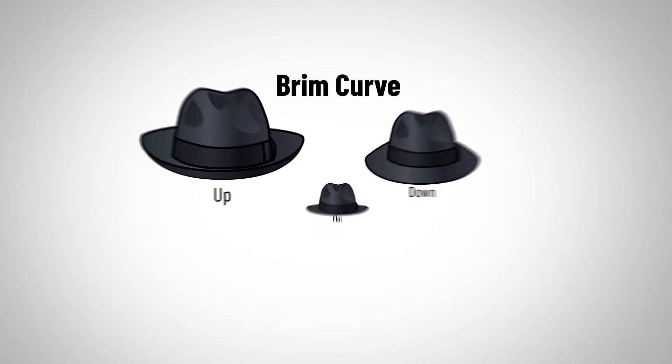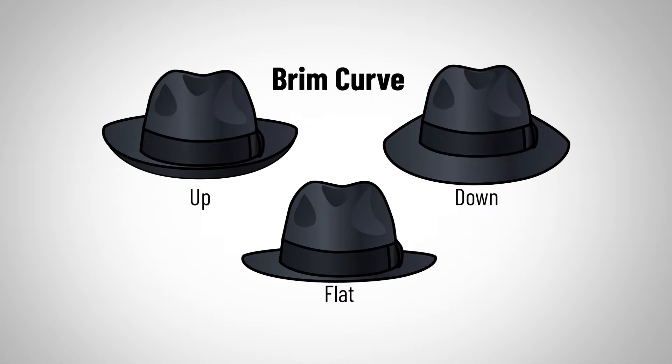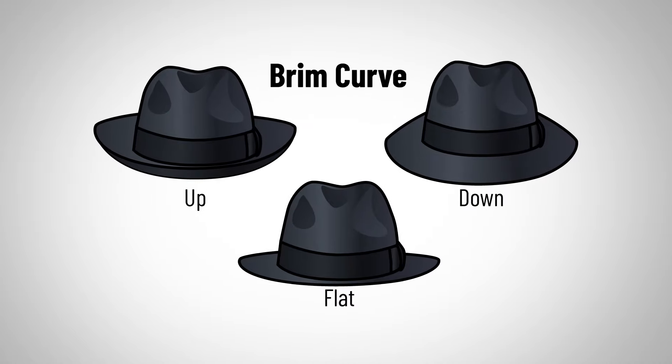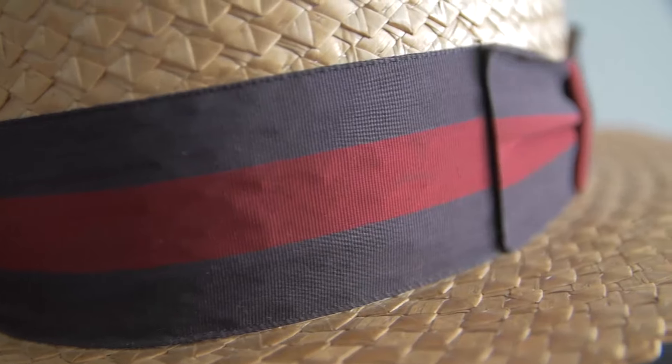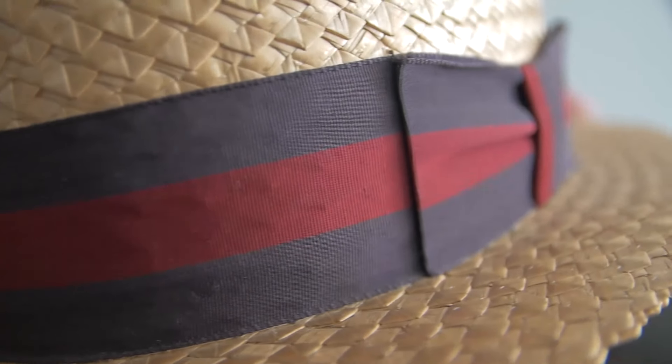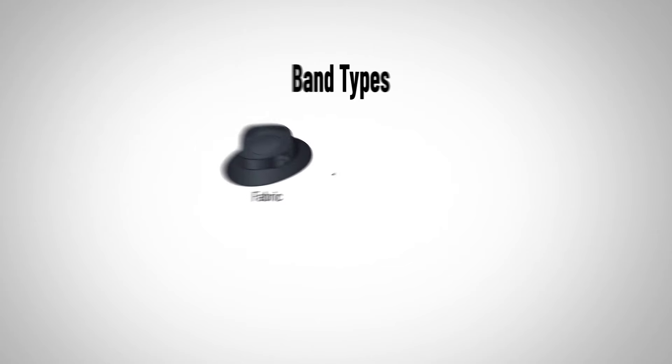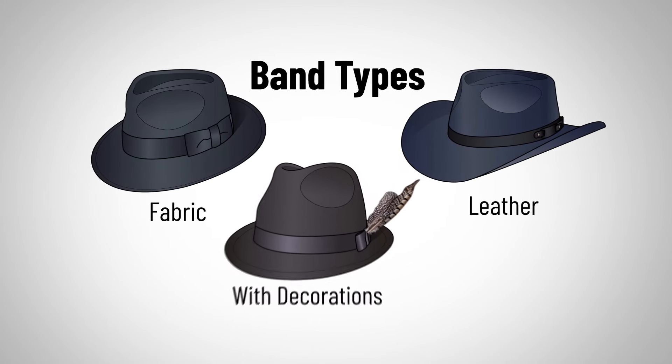Not only in the front, which is basically the front curve of the brim, but we're also going to see on the sides — if it curves up, if it curves down, an entirely different looking hat. And last but not least, let's talk about the band. You're going to see a wide variety of different materials, from fabric to leather and more.